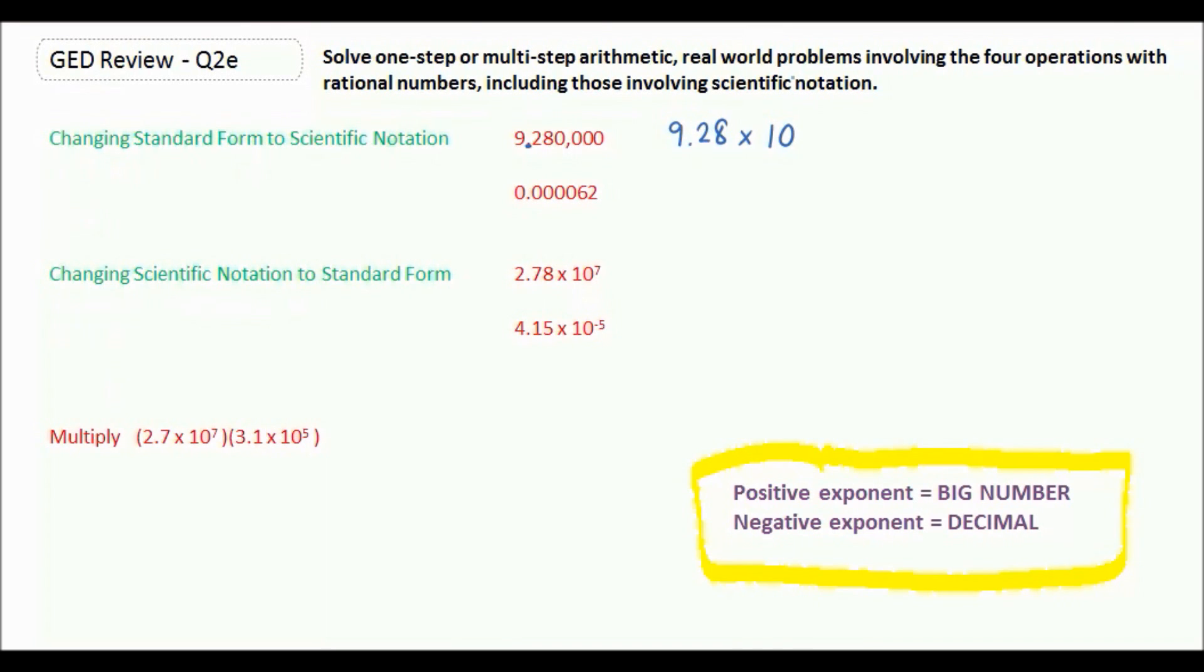Well you have to remember that on a whole number, there's an invisible decimal at the end of it. So we slid it once, twice, 3 times, 4, 5, 6. So it would be 9.28 times 10 to the 6th power.